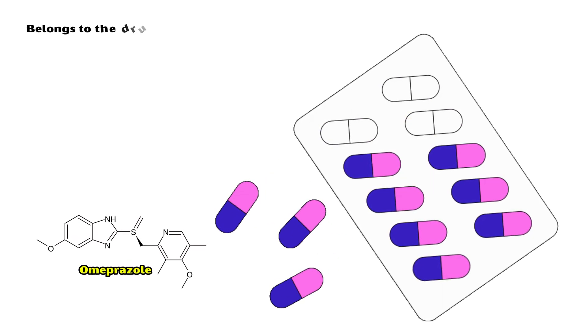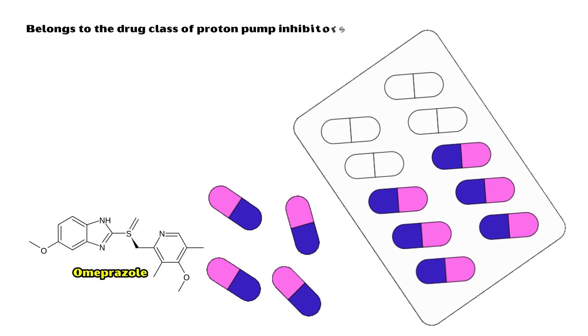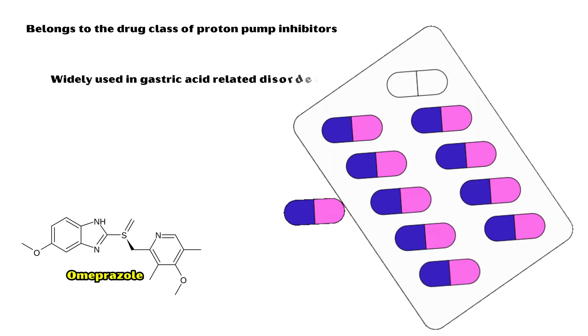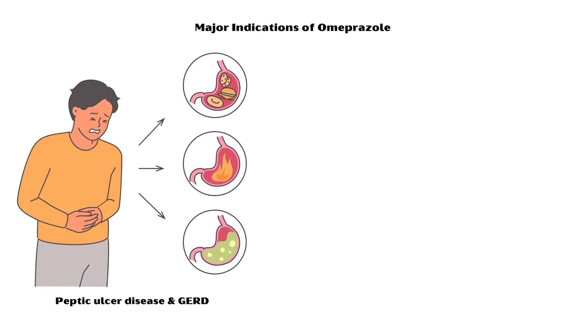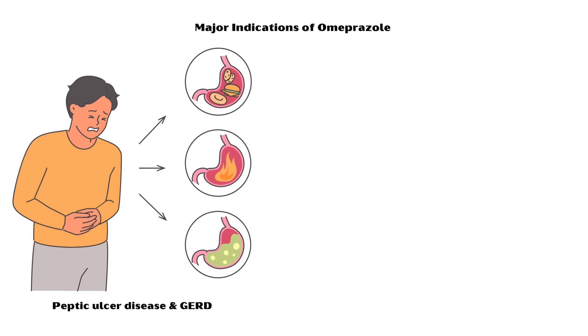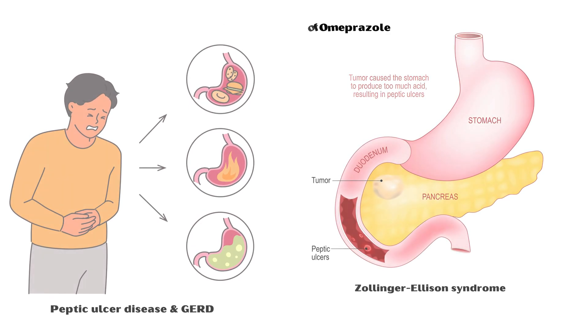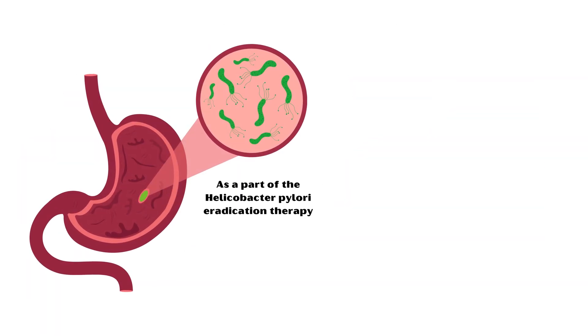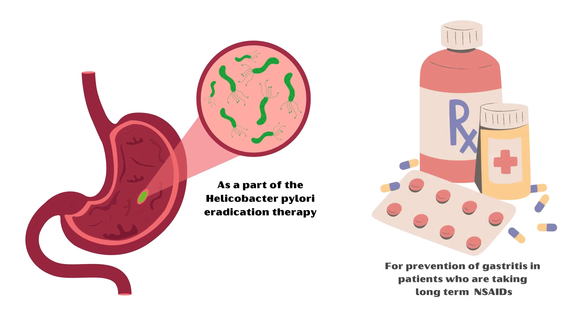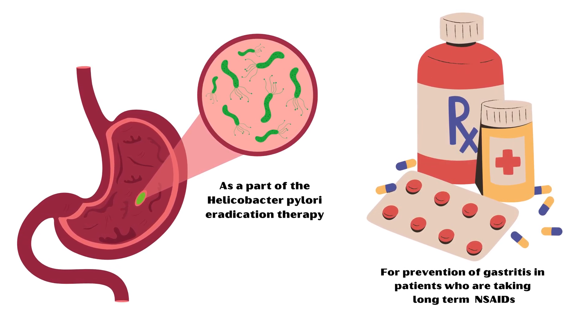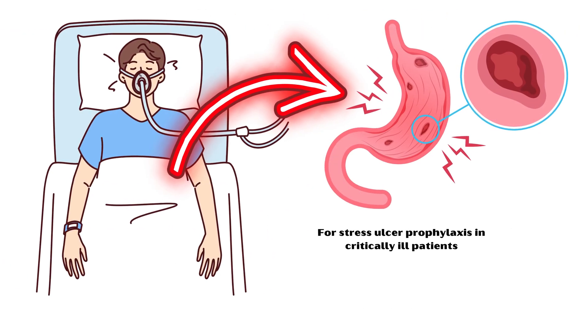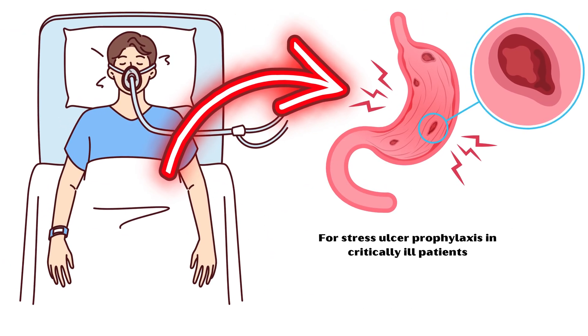Omeprazole belongs to the drug class of proton pump inhibitors and is widely used in gastric acid-related disorders to reduce acid secretion. Major indications of omeprazole include the treatment of peptic ulcer and gastroesophageal reflux diseases, Zollinger-Ellison syndrome, as part of Helicobacter pylori eradication therapy, for prevention of gastritis in patients taking long-term non-steroidal anti-inflammatory drugs, and for stress ulcer prophylaxis in critically ill patients.